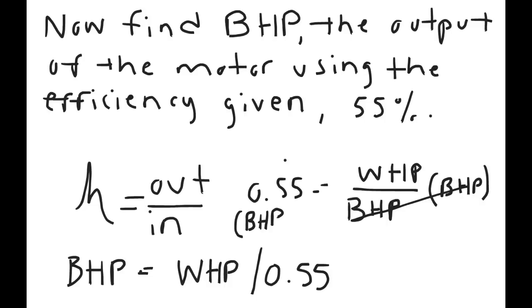That is, 0.55, the efficiency, 55%, is equal to the water horsepower over the brake horsepower. So when you set it up algebraically, it is brake horsepower equals water horsepower over 0.55.